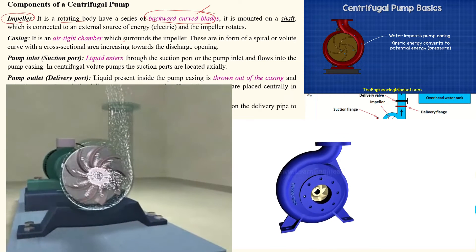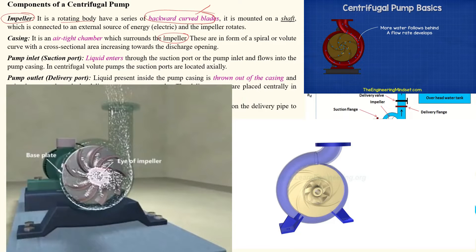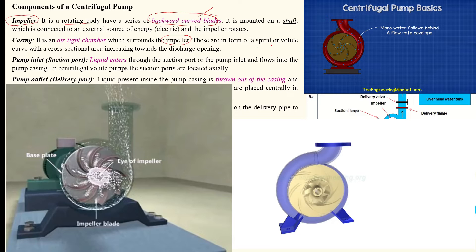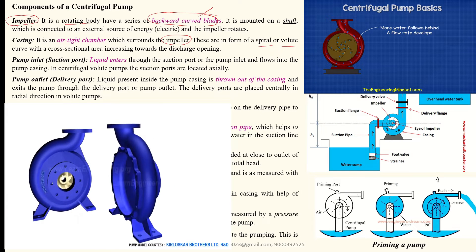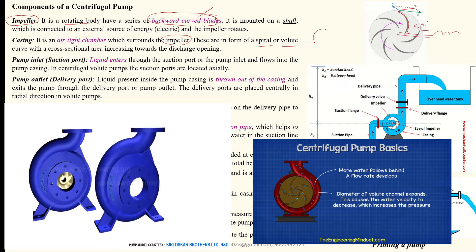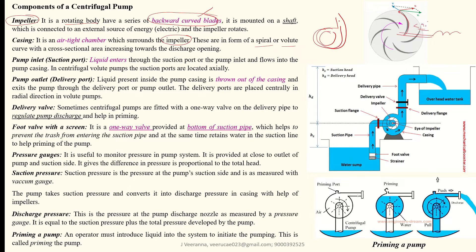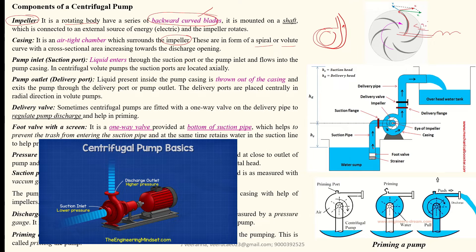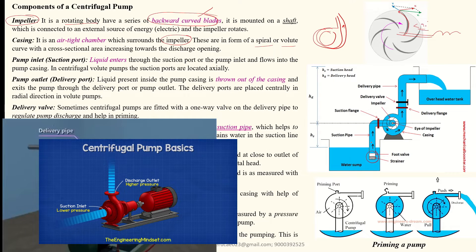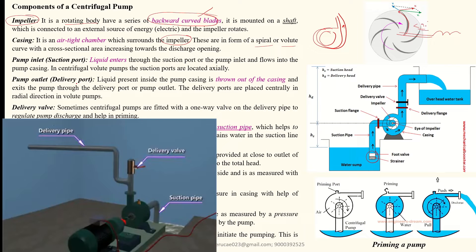The casing is a tight chamber which surrounds or covers the impeller. When it is a spiral or volute type, we call it a diffuse type — in this condition, the cross-sectional area of the casing gradually increases toward the outlet. This is the pump inlet, also called the suction port, where the water enters the pump.